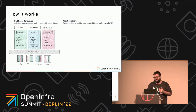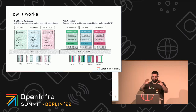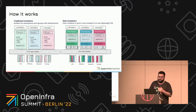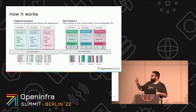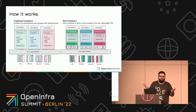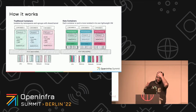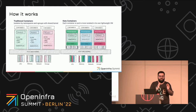Kata Containers is pretty much the same thing, but we provide an extra hardware virtualization layer where you can actually run your container process inside. If there is an escape with a traditional container, you are pretty much on the host Linux kernel and can do whatever you want if not confined by something like SELinux. With Kata Containers, if you have an escape, you are inside a really lightweight virtual machine, and the only things you can see are resources allocated specifically for your pod.